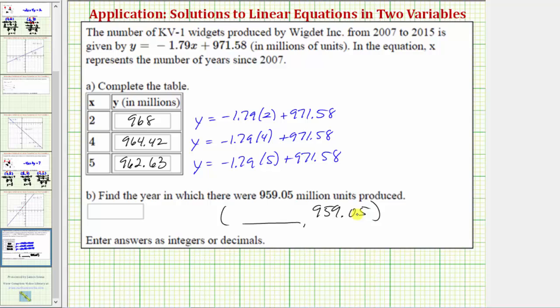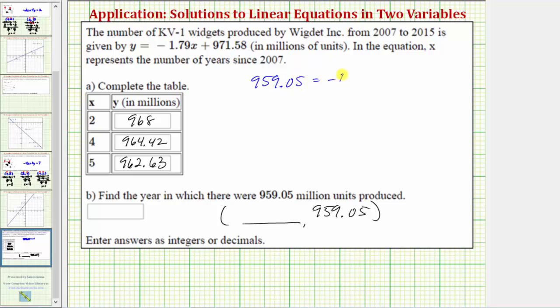So now we'll substitute this value for y, and then solve for x. So we'd have the equation 959.05 equals negative 1.79x plus 971.58. Now we'll solve the equation for x. This will give us how many years since 2007 that 959.05 million units were produced.